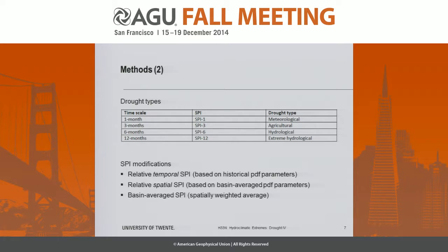We looked at the SPI index for four different timescales, or aggregation levels: one month up to 12 months, representing meteorological droughts, agricultural droughts, hydrological droughts, and what we call extreme hydrological drought at a timescale of 12 months.